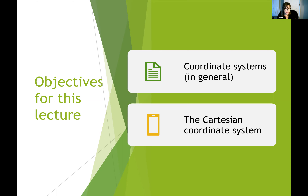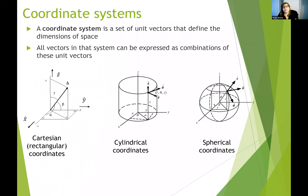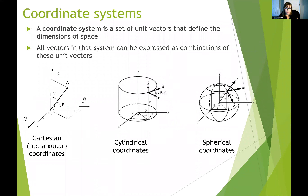A coordinate system is just a set of unit vectors to define the dimensions of space. We live in a three-dimensional world, so most coordinate systems we deal with are three-dimensional, meaning there should be three unit vectors. It is possible to go into higher dimensions in computer science or theoretical physics, but we are going to stay in the real world, which is three dimensions.